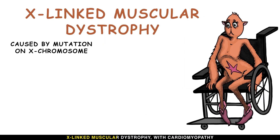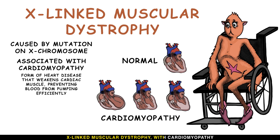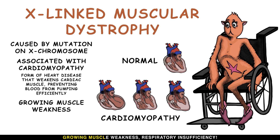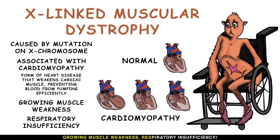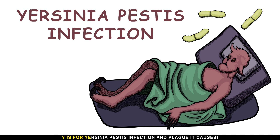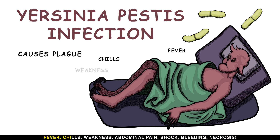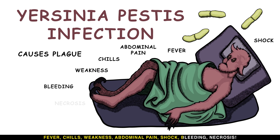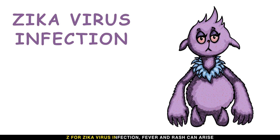X is for X-linked muscular dystrophy, characterized by growing muscle weakness and respiratory insufficiency. Y is for Yersinia pestis infection — the plague — causing fever, chills, weakness, abdominal pain, shock, bleeding, and necrosis.